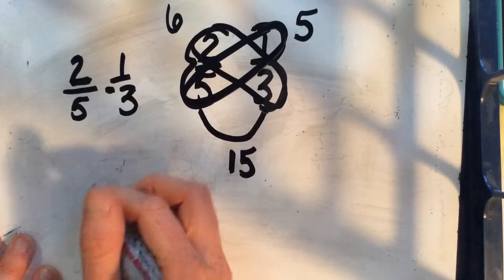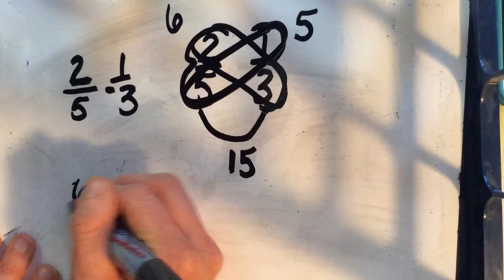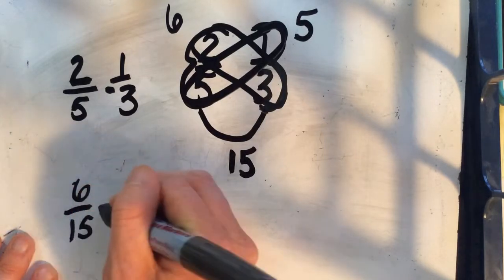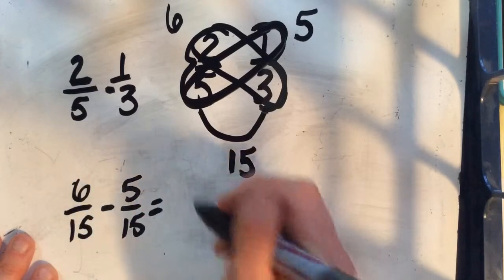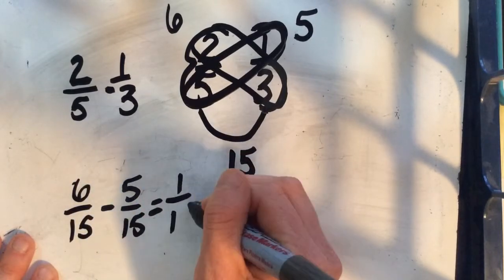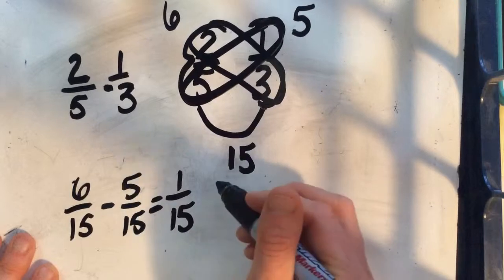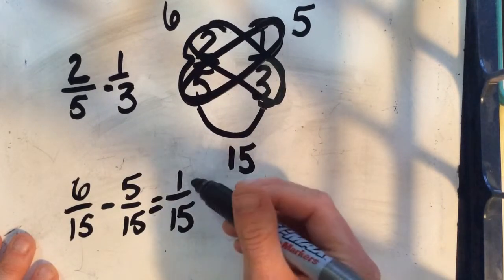So I can rewrite my subtraction problem as 6 fifteenths minus 5 fifteenths, and that will give me 1 fifteenth. I don't need to simplify any further because the only common factor now between 1 and 15 is 1.